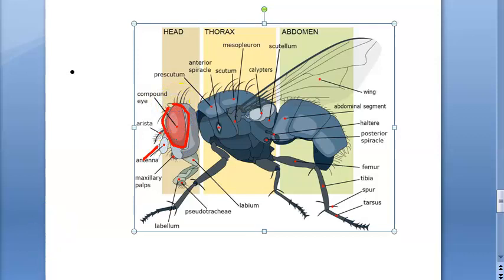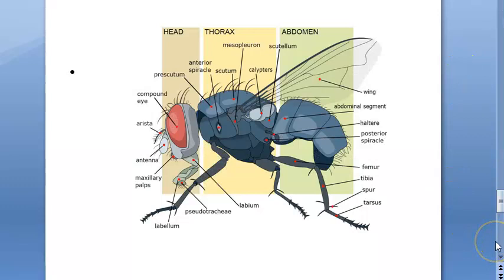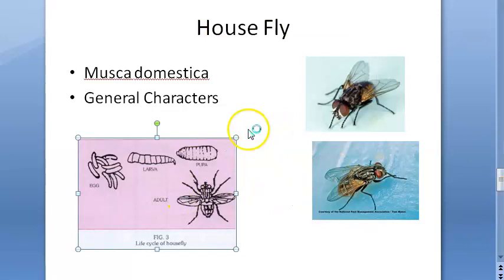The compound eyes of the male are close together, whereas those of the female are wide apart. The head also has a proboscis, which is retractile - it can retract the proboscis and is used to suck liquid foods. The thorax is marked with two to four dark longitudinal stripes.